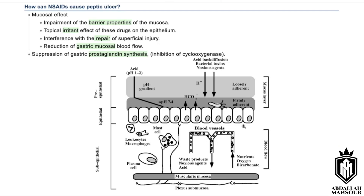All of this results from prostaglandin synthesis inhibition via cyclooxygenase inhibition. To summarize the steps: one — mucosal barrier disruption; two — reduced epithelial repair capacity; three — impaired blood vessels. Aspirin and NSAIDs act on all three to prevent healing.